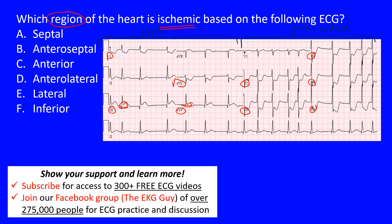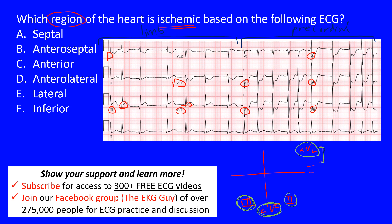Whenever we have ischemia, you need two contiguous leads. If we draw out our system — Lead I, Lead II, Lead III, AVF — AVL is up here. Contiguous means they're next to each other. So if you had ST elevation in one lead but none of the others, they're not contiguous. You need it in I and AVL together, or you need it in III and AVF, or II and AVF. In this case we have Lead III and AVF, which puts us in the inferior region.